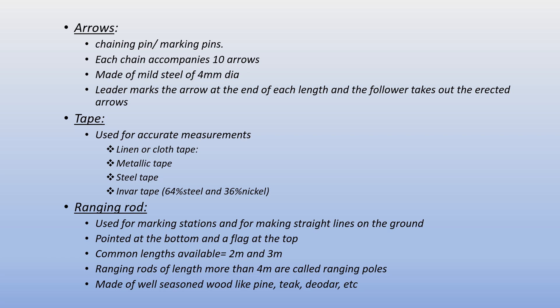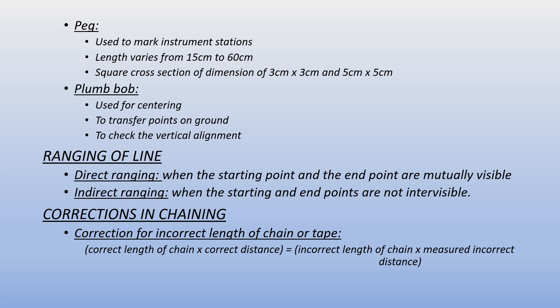Ranging rods of length more than 4 meters are called ranging poles. They are made of well-seasoned wood such as pine or deodar. Stations are marked as straight lines on the ground. The bottom portion is pointed to insert into the soil. Commonly, ranging poles are 2 or 3 meters in length.